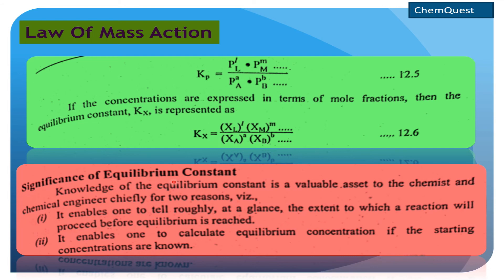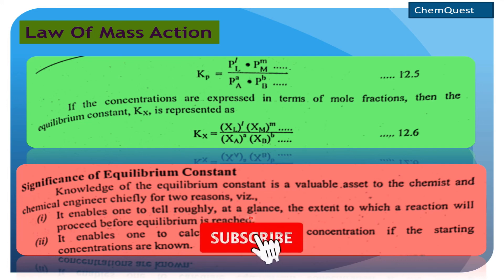Significance of equilibrium constant: knowledge of the equilibrium constant is a valuable asset to the chemist and chemical engineer, chiefly for two reasons. The first one is it enables one to tell roughly at a glance the extent to which a reaction will proceed before equilibrium is reached — یعنی equilibrium constant کی value سے ہمیں پتہ چل سکتا ہے کہ reaction forward side پہ جائے گا یا reverse side پہ۔